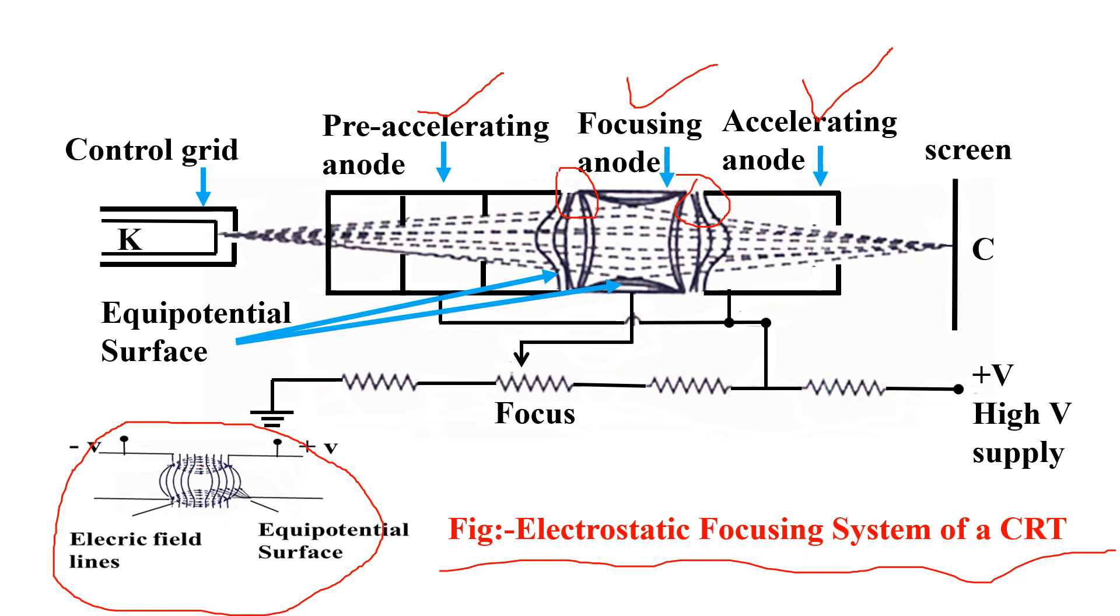With the help of that knob, we can adjust the voltage on the focusing anode. Therefore, the focal point of the beam can be moved along the CRT axis by changing the focal length of the electron lens system.